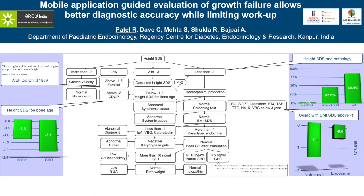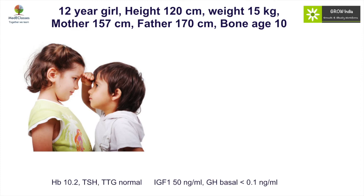The next question in further pathological evaluation was whether TTG needs to be done in all individuals. Our study shows that nutritional pattern growth failure is more likely to be related to celiac disease, but it is not a clear-cut marker due to overlap, so we need to do a TTG in every individual. This algorithm has been built into our mobile application — all one has to do is enter the data in the growth interpreter, get the information, and then use the growth approach pathway to get the analysis.